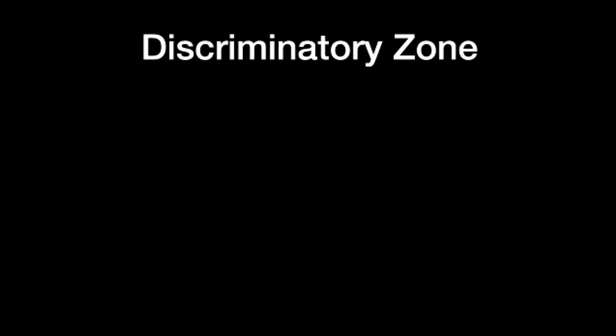The logic goes like this: if you scan someone transvaginally and don't see anything, and their quant is some egregious number like 8,000, theoretically you should be seeing an IUP — so it should really raise the question of whether this is ectopic. It gets murkier when you get closer to the discriminatory zone, say a quant of 1,500 — could this be viable, could I just not see anything yet? Or if the quant is 500 and you don't see anything, it's probably just too early. According to Dublay's article, at a level of 2,000, one was viable, 19 were ectopic, and 38 were non-viable.